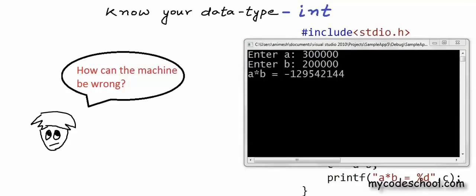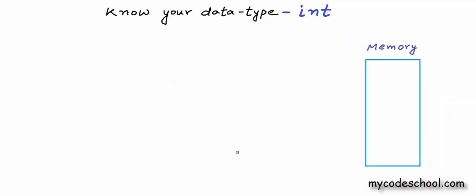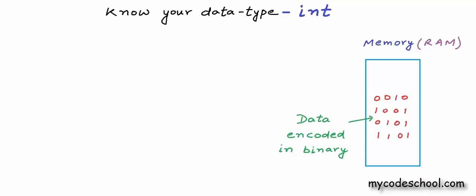To understand this, we need to go back to the basics of how data is stored in computer's memory. This figure represents the computer's main memory, or random access memory, or RAM. At the lowest level in its architecture, the machine understands only binary. All communication happens in binary and all data is stored in binary, so whatever data goes into memory must be encoded in binary. Computers deal with all kinds of data.